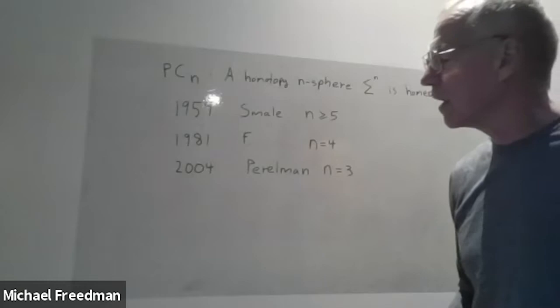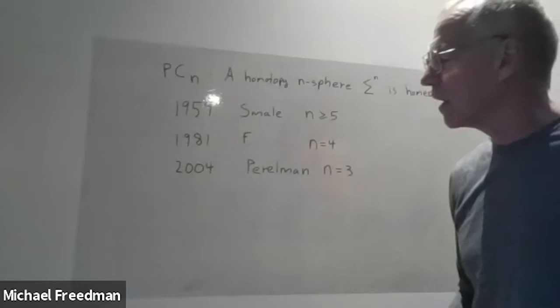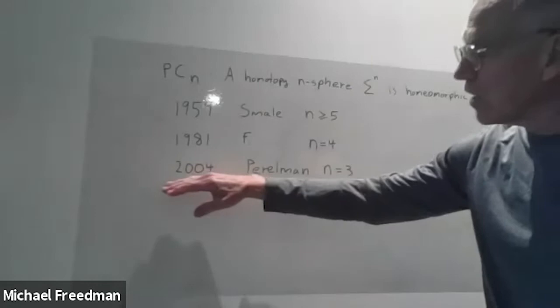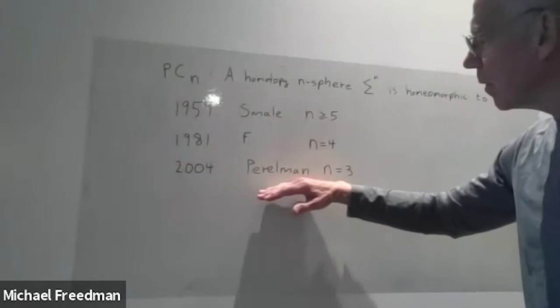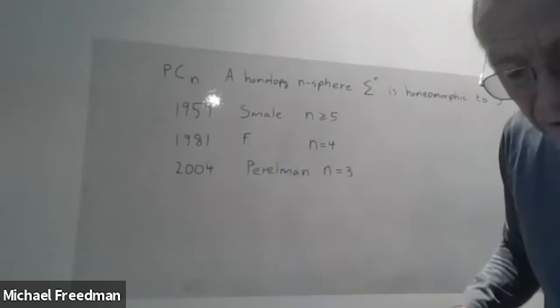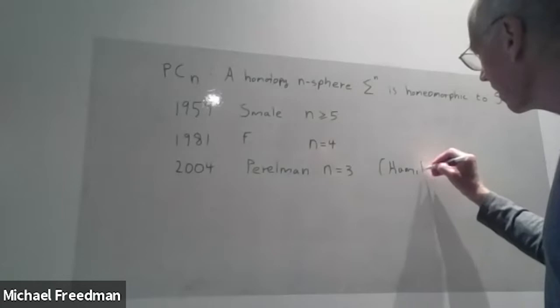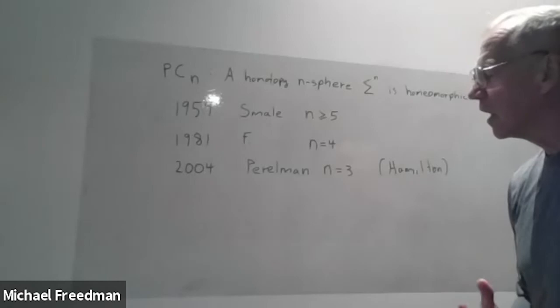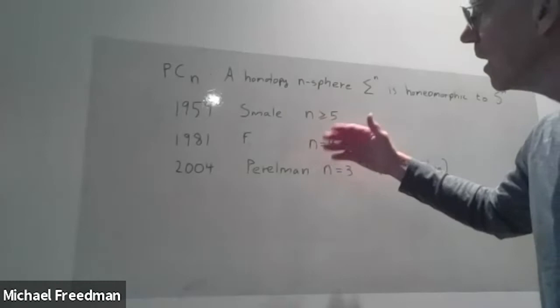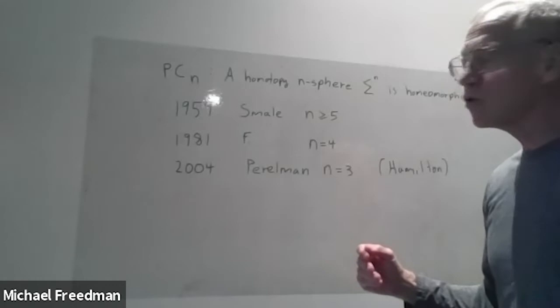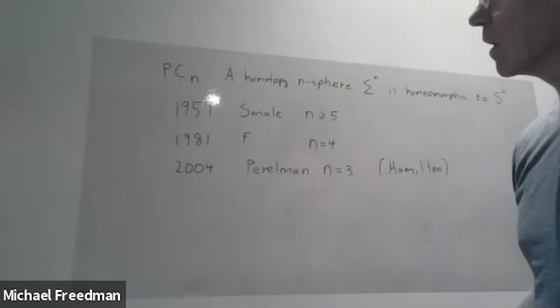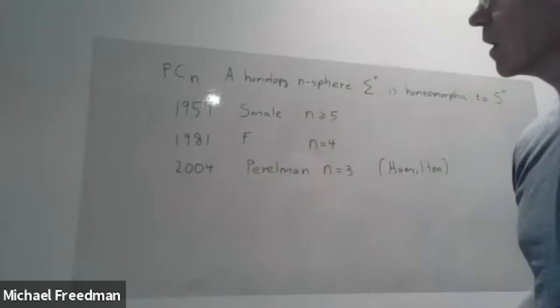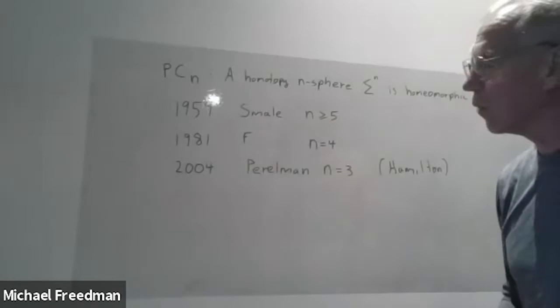The theorem was proved in high dimensions, n greater than or equal to five, by Smale in 1959. The work I'm talking about today is from 1981, which extended Smale's result to dimension four. And then another 23 years later, Perelman finished the problem by proving the Poincaré Conjecture in dimension three, completing a program of Hamilton's. Perelman's work is completely different — it's Ricci flow and PDEs — whereas the four-dimensional case can be thought of as a technical solution to a problem that stopped Smale in his original proof.